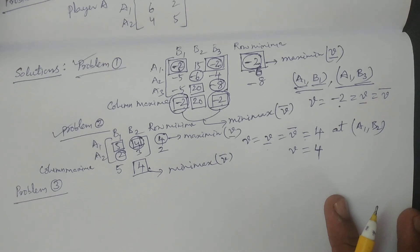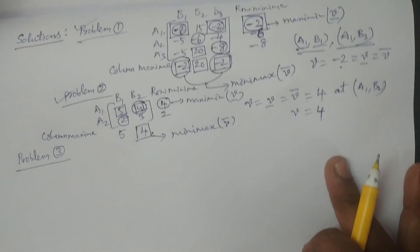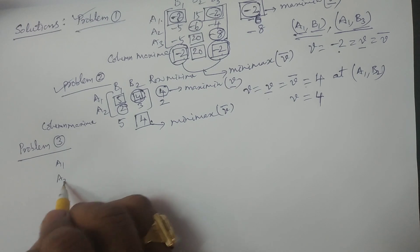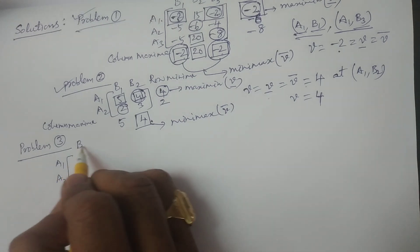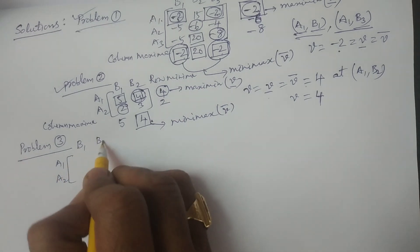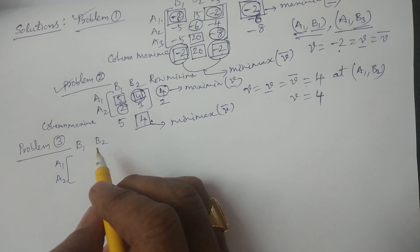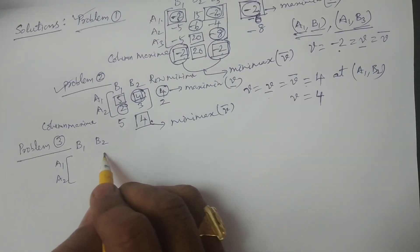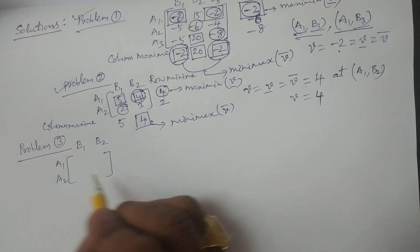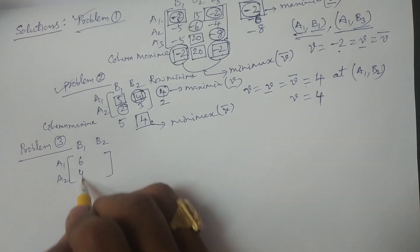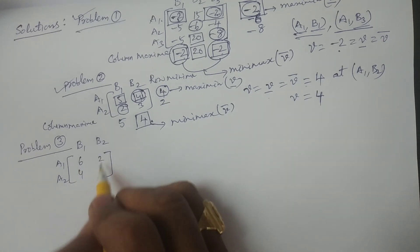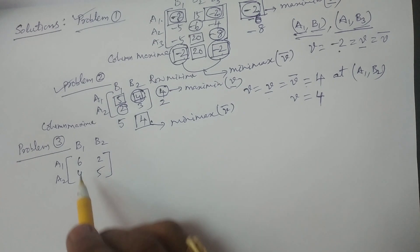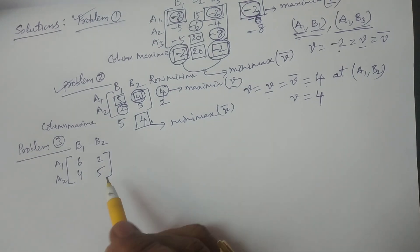Problem 3: I consider a 2x2 payoff matrix for player A with strategies A1, A2 and player B with B1, B2. The payoff matrix values are 6, 4 (first row) and 2, 5 (second row). Again, for every problem of game theory you must first calculate the maximin and minimax values.